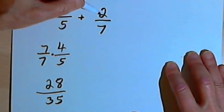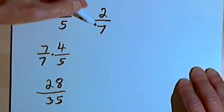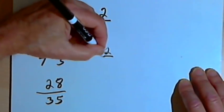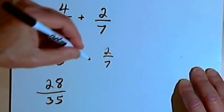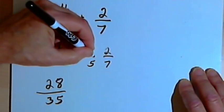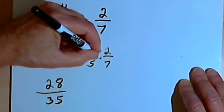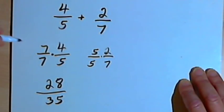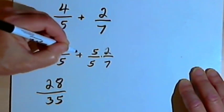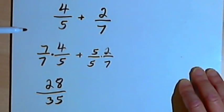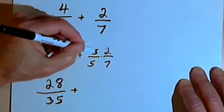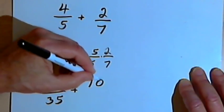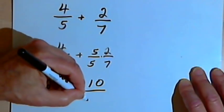Now I'm going to do a similar process for the second fraction, 2 over 7. I want to turn the denominator into 35, so I would have to multiply that by a 5, which means I'm going to multiply the whole fraction by 5 over 5, which is just equal to 1. So now I can do the multiplication: 5 times 2 is 10, and 5 times 7 is 35.